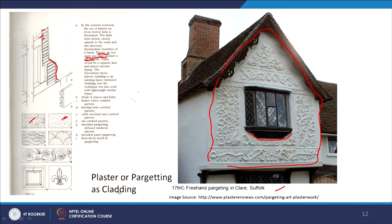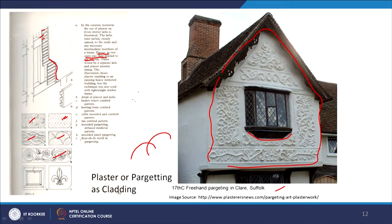There are different pargetting patterns: zigzag, cable-molded or combed, fan combed, molded pargetting with debased medieval patterns from medieval times, and molded panel pargetting. A variety of motifs — Corinthian or natural elements — can be incorporated. This technique is very relevant when dealing with culturally responsive built environments, and when renovating or introducing new intrusions near these buildings, care must be taken from an urban design perspective as well.